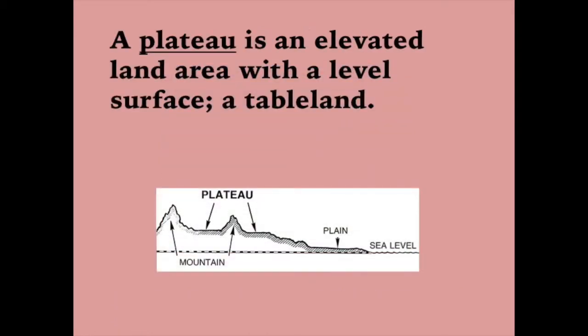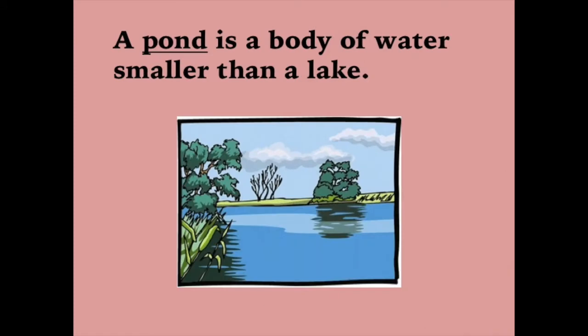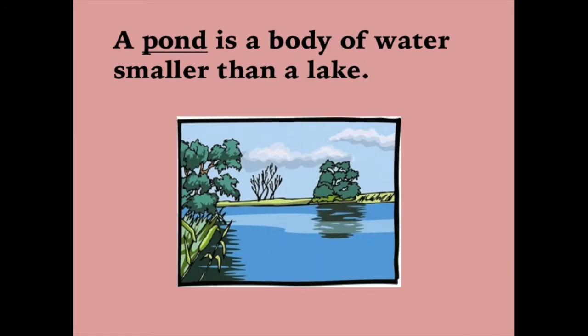A plateau is an elevated land area with a level surface, a table land. A pond is a body of water smaller than a lake.